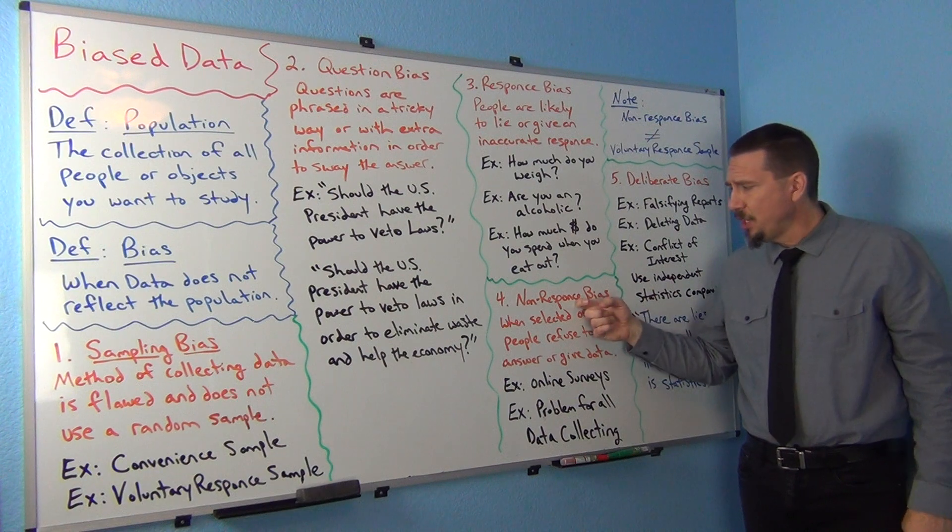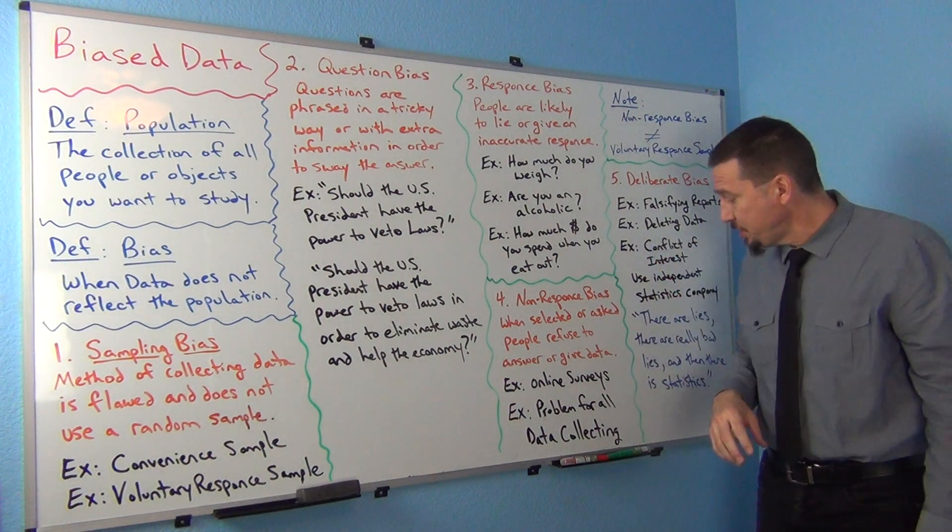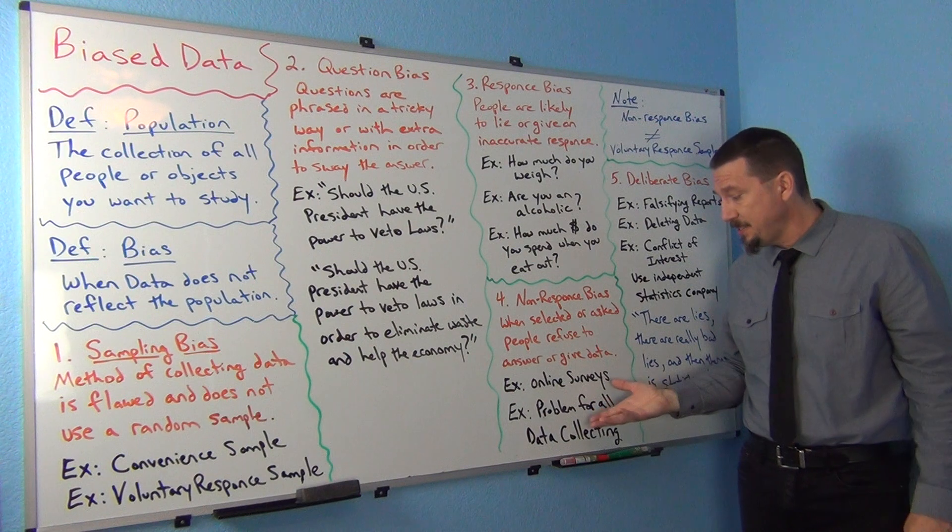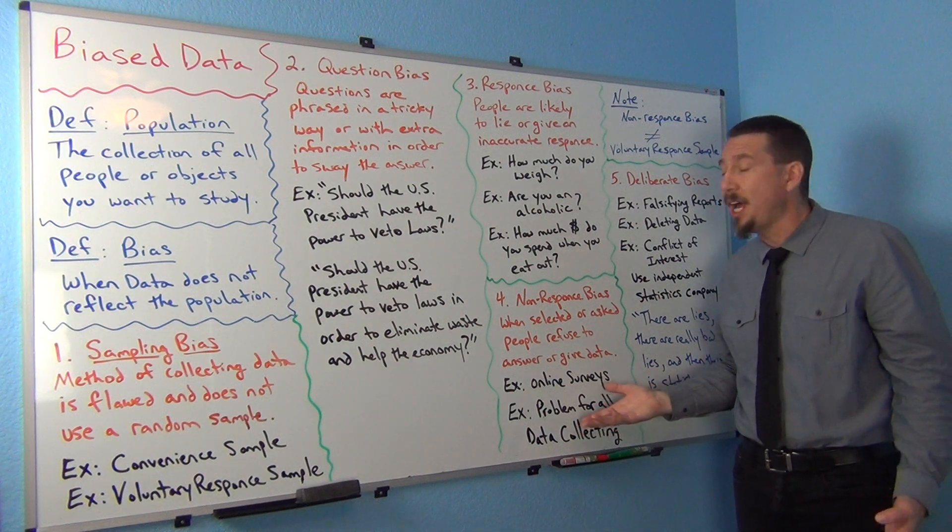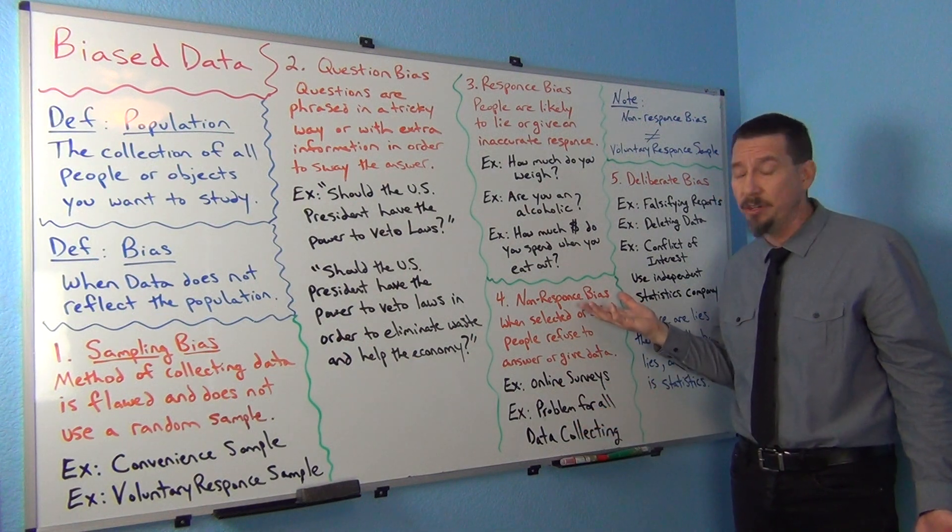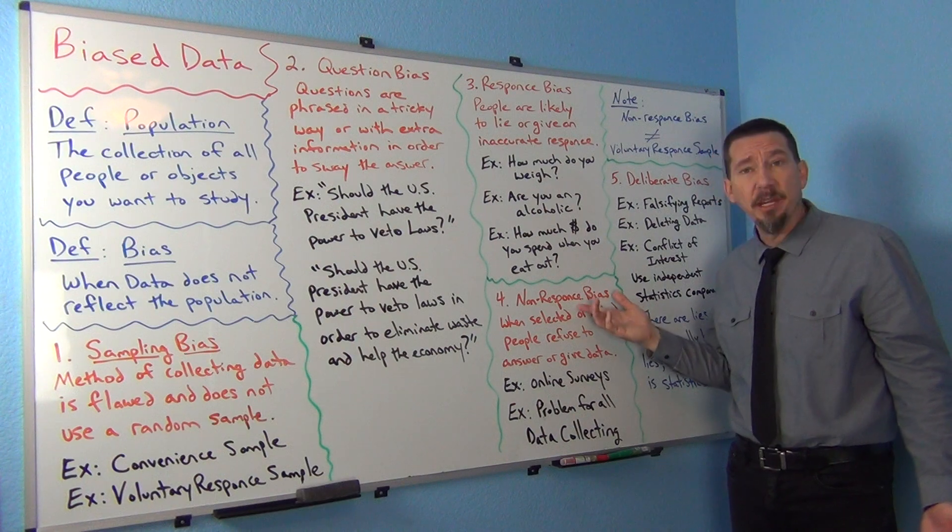That all falls under non-response bias, but you can even, even in a simple random sample, right? Or in the U.S. Census. The U.S. Census, we're getting a lot of people that are not answering. They're not filling it out. That's a big problem.